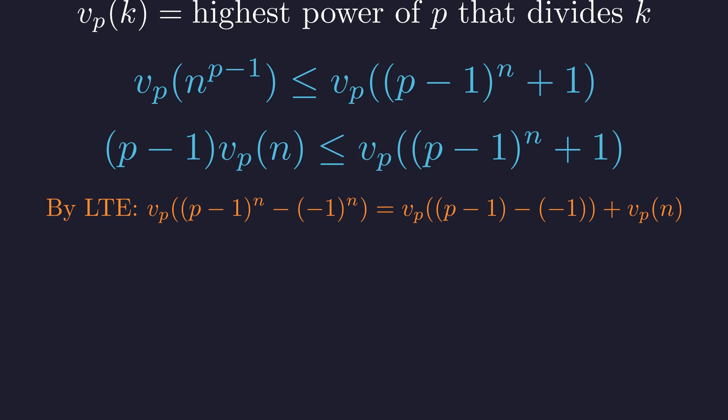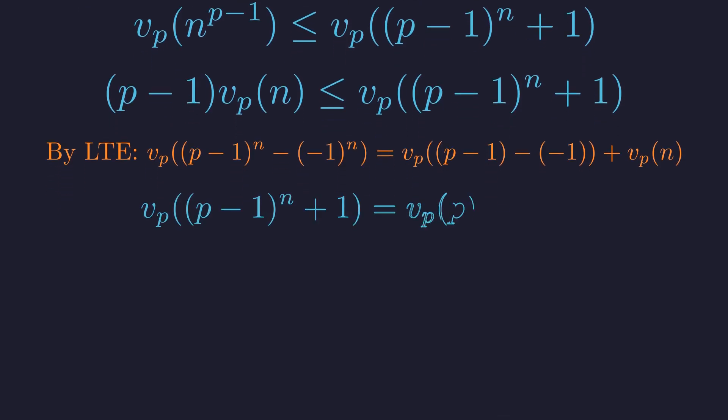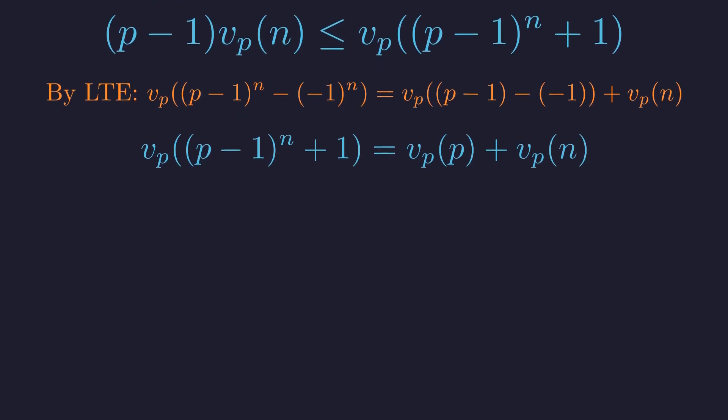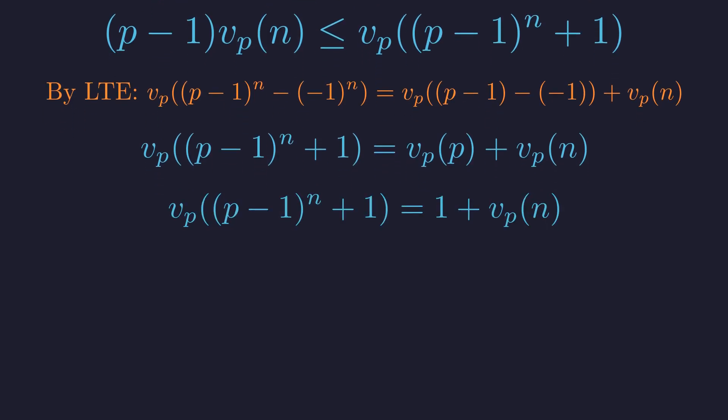The lemma states the valuation of the sum of powers equals the valuation of the sum of bases plus the valuation of the exponent. Applying the lemma gives us v_p(p) + v_p(n). Since the highest power of p that divides p is p^1, v_p(p) is just 1. The right side simplifies to 1 + v_p(n).